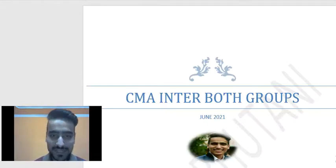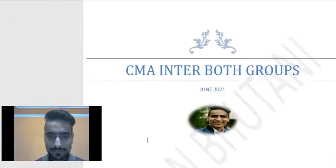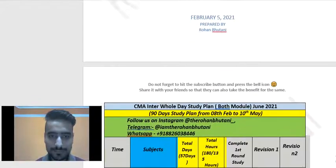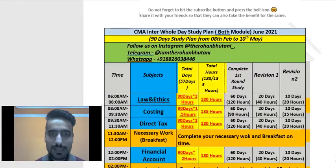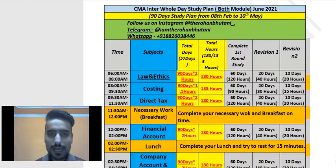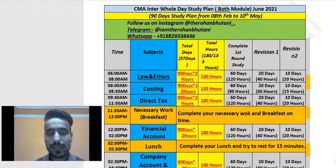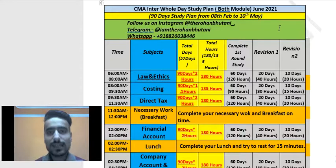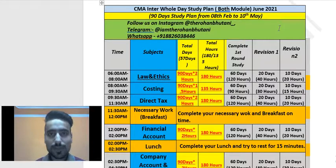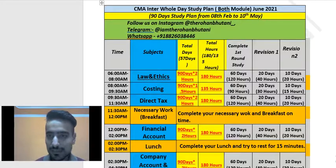So without wasting much time, let's begin. This is the CMA Inter both groups plan for June 2021. It is a whole-day study plan for both modules — a 90-day study plan starting from 8th February 2021 to 10th May 2021. Since it covers both groups, it requires more effort, and I have made the whole-day study plan keeping that in mind.